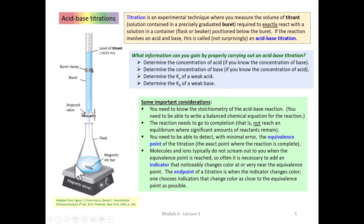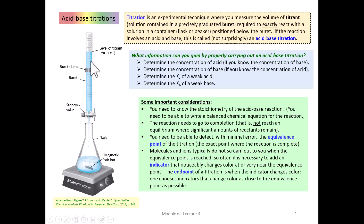The key to a titration is careful measurement of the volume of titrant needed to reach the equivalence point — to completely react what you start with in the flask or beaker. What we're doing in a titration is counting things. Titrations are set up so you know a lot about the solution in the burette but less about the solution in the flask, and from the volume of titrant added, you're literally counting the number of molecules or ions of interest in the flask.